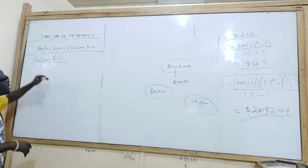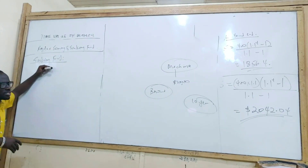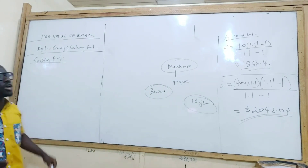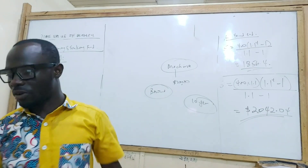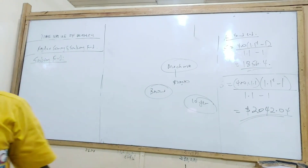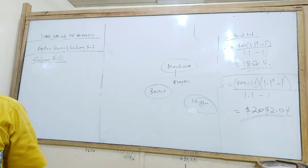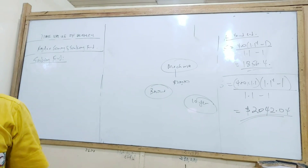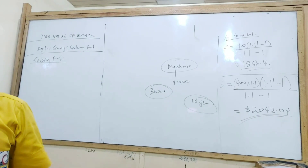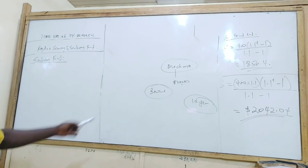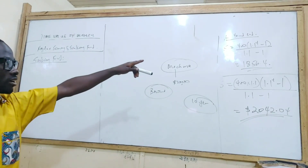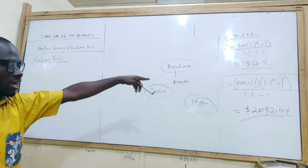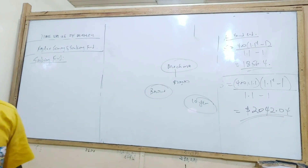Now, when it comes to the sinking fund, how do we go about it? Let's take a question straight up and use that for our explanation. We will still be using the geometric progression formula.